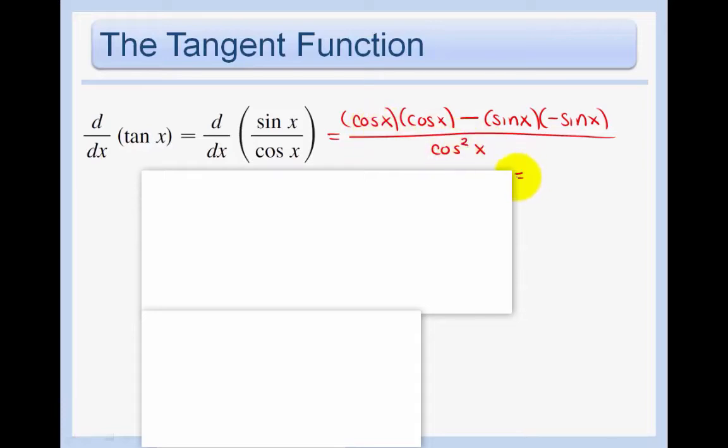So we get cos² x + sin² x. And remember your trig identity is cos² x + sin² x = 1. And 1 over cosine is secant. So 1 over cos² x would be sec² x. So we've just learned another important thing. The derivative of tan x is sec² x.